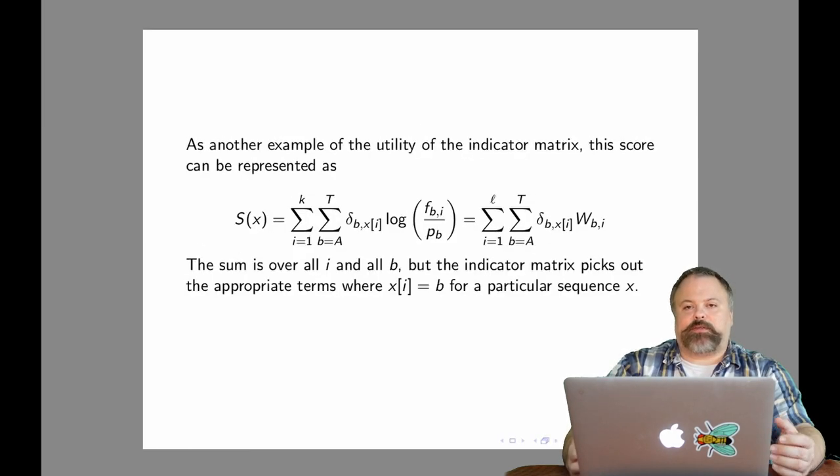Another way we can represent this is using our indicator matrix that we previously defined. S of X can be defined as the sum over both i and b of our indicator matrix times our PSSM matrix, also called a weight matrix. In a way, this is kind of like a matrix dot product, where we're simply multiplying element-wise the terms of our indicator matrix and our weight matrix. Either way, the score can be interpreted as the log likelihood ratio of the probability of being a motif versus the probability of being a random sequence.